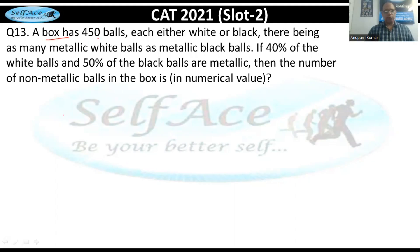A box has 450 balls, each either white or black, with as many metallic white balls as metallic black balls. 40% of the white balls and 50% of the black balls are metallic. Find the number of non-metallic balls in the box.